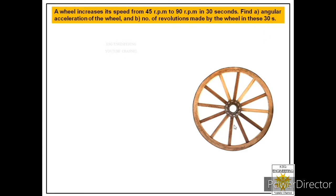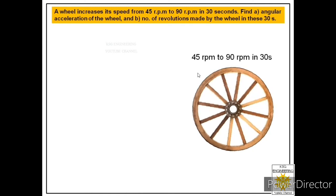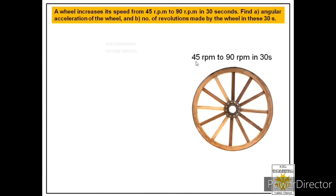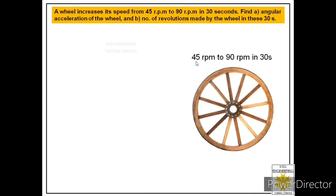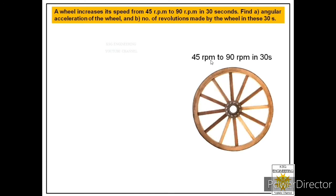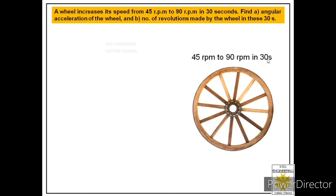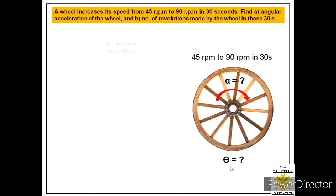We are given one wheel, and initially this wheel was revolving at 45 rpm, but in 30 seconds its speed is doubled to 90 rpm. In the first part we are asked to find angular acceleration of the wheel, and we have to find the number of revolutions made by the wheel in these 30 seconds.